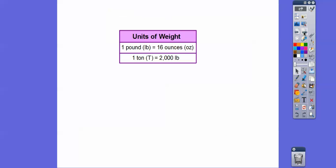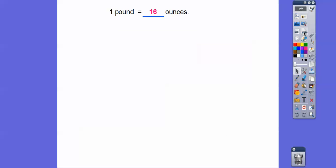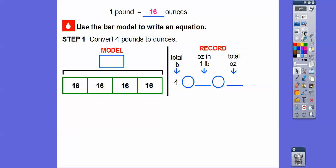All right, so remember, one pound equals 16 ounces right there. So let's go ahead and put that in there. And then we're going to convert the four pounds to ounces, and we're going to use this bar model right here to write an equation. So here is four groups of 16. Well, four groups of 16 is the same as four times 16. So we'll write that right here, and we'll put four times 16 right here, and this will be for my equals right here, okay?